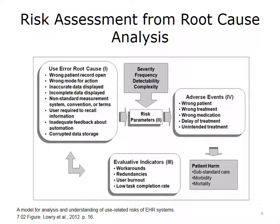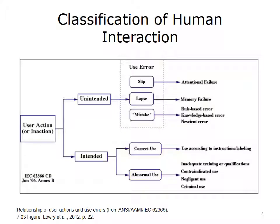This slide illustrates how the Root Cause Identification taxonomy can be used as part of a risk assessment that combines severity and frequency to predict the probability and severity of an adverse event. This figure illustrates a categorization of the human interaction contribution to a medical error that leads to different types of failure.